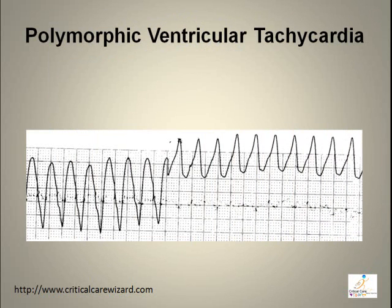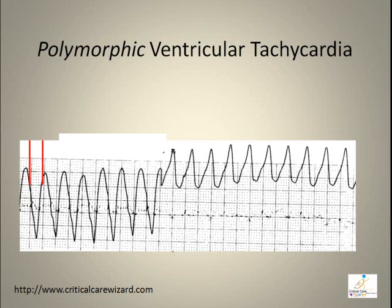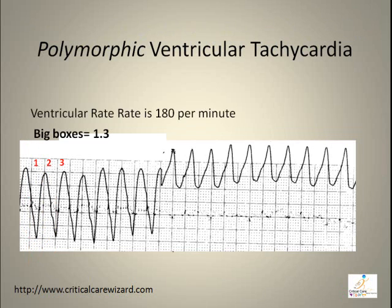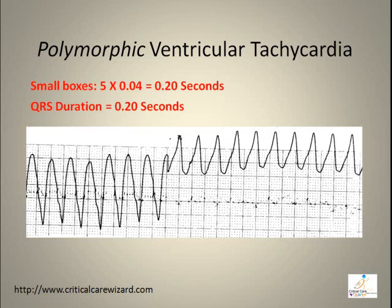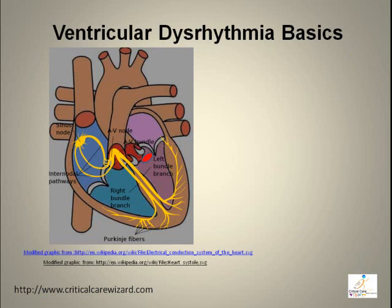Polymorphic ventricular tachycardia has an irregular pattern and shape with no discernible P wave, a rate more than 100 beats per minute, and a QRS duration of more than 0.10 seconds. It originates from more than one focus of the ventricular muscles, and the shifting of foci causes the irregular pattern on the EKG paper.